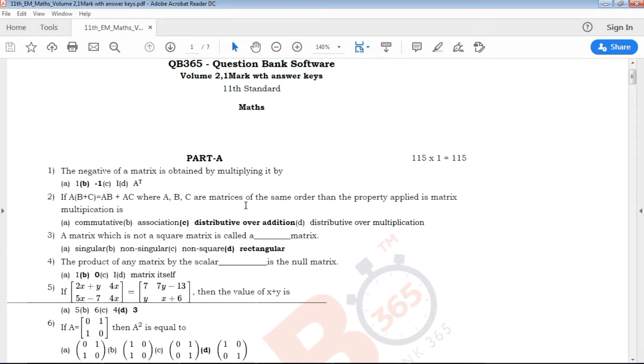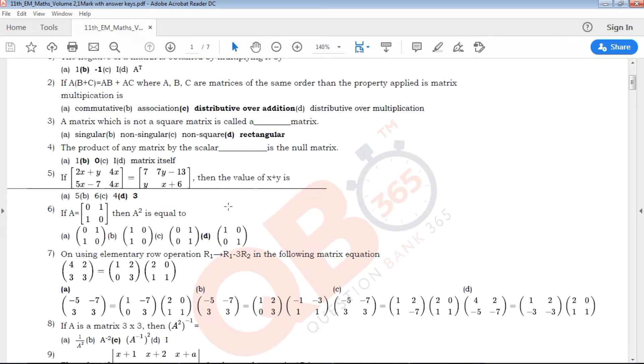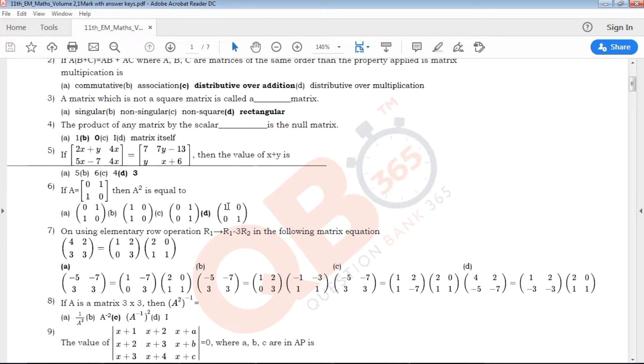In these 105 questions, we will talk about one marks. We will talk about book back and creative questions. Not only book back but creative. This is the answer key for students.